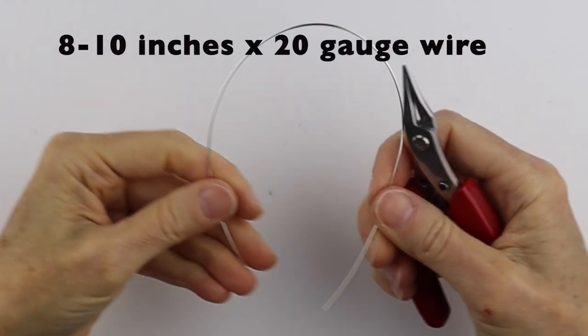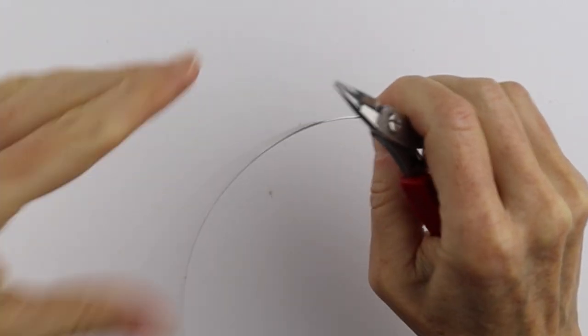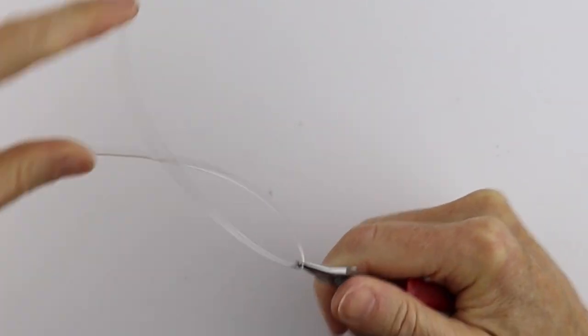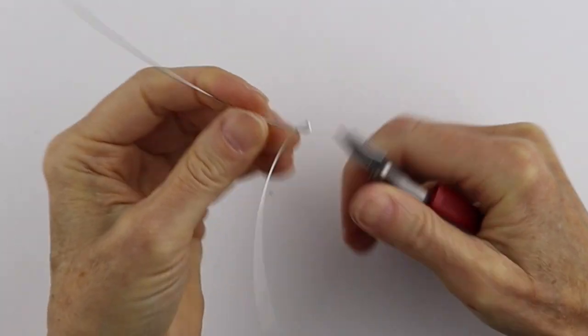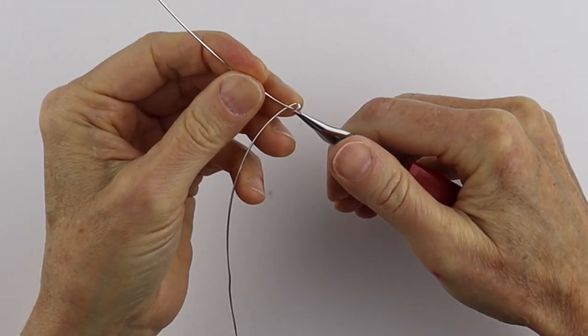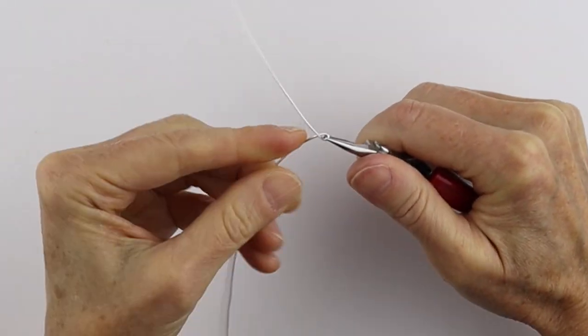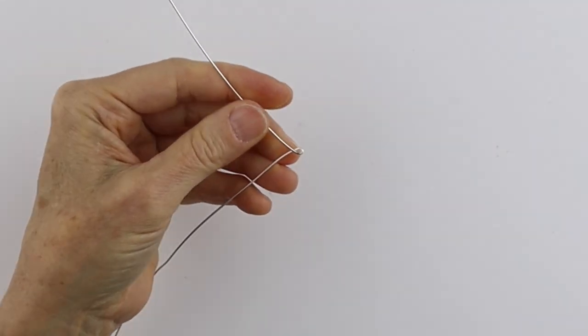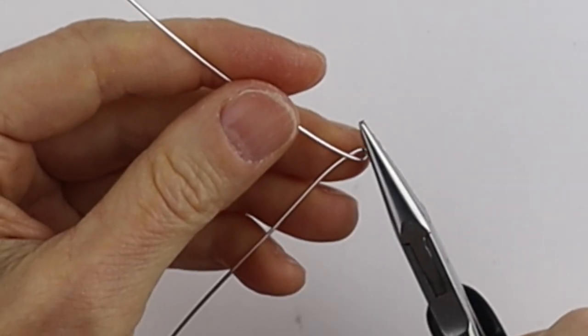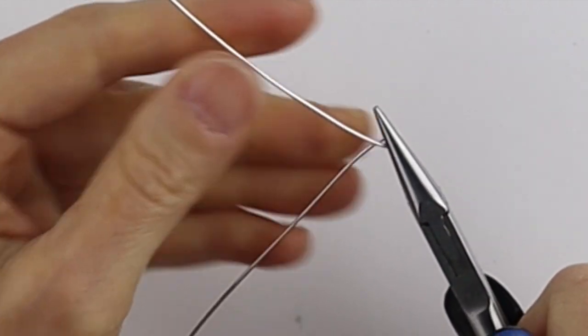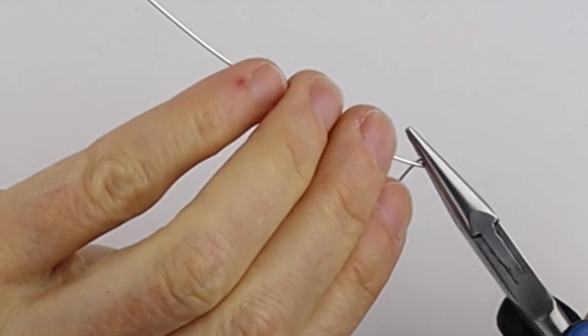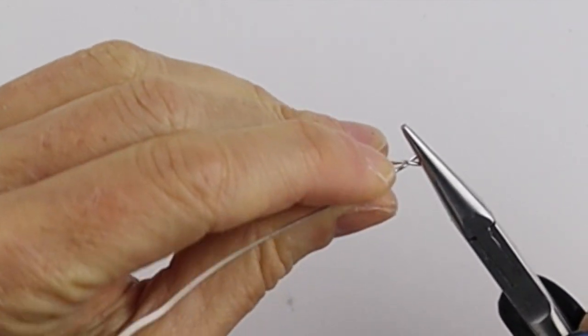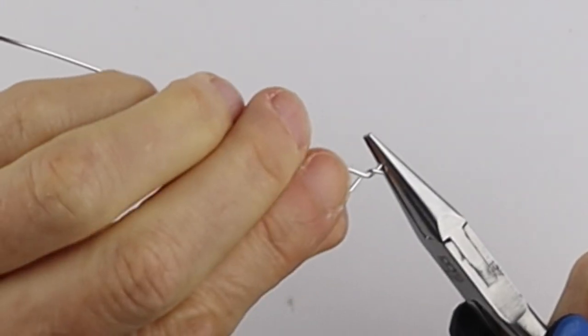Just fold it in half, give it a little bend, and crisscross the wires just like that, leaving a little bit of a loop there. Then take your flat pliers and we're just going to twist it. Take these wires and with a flick of the wrist, twist it around like that.